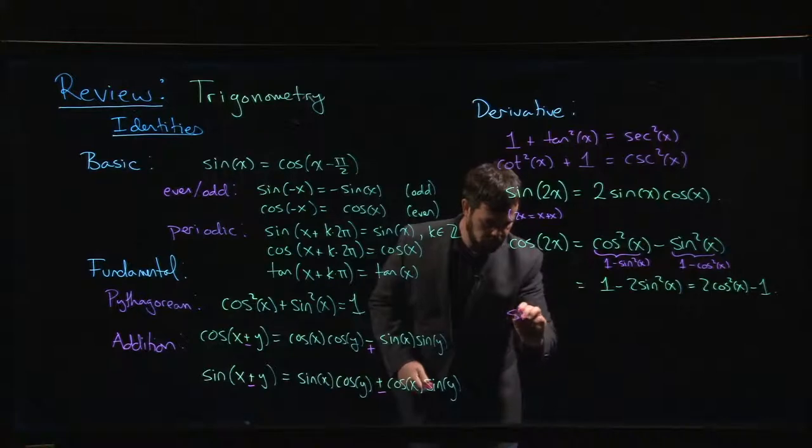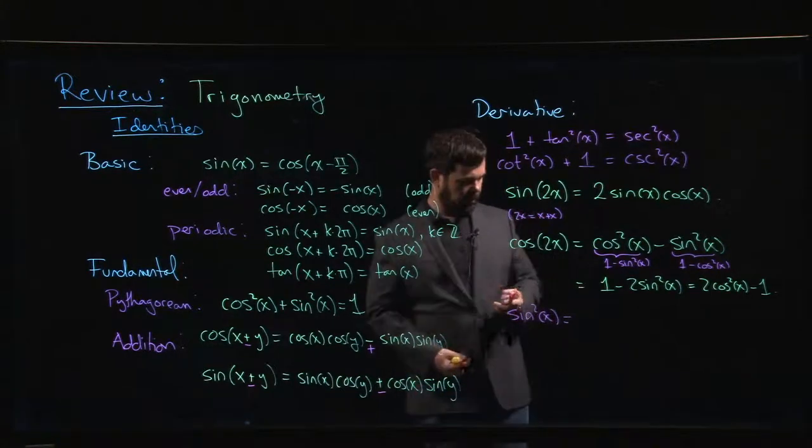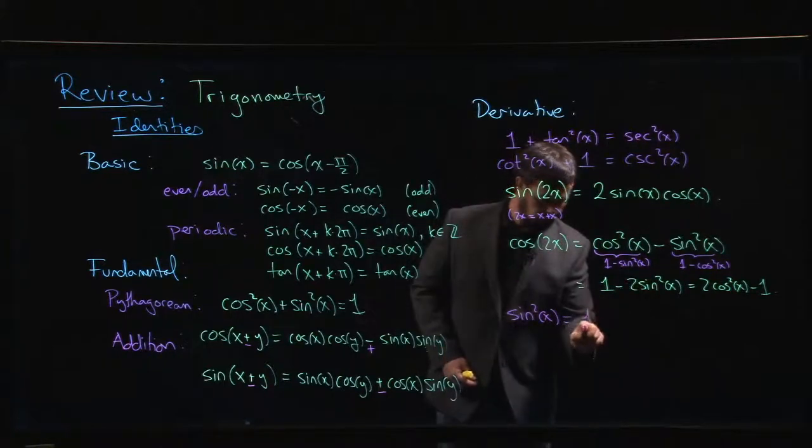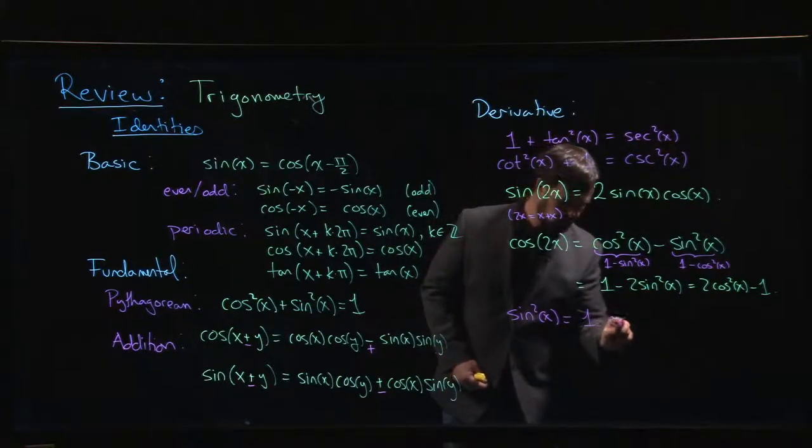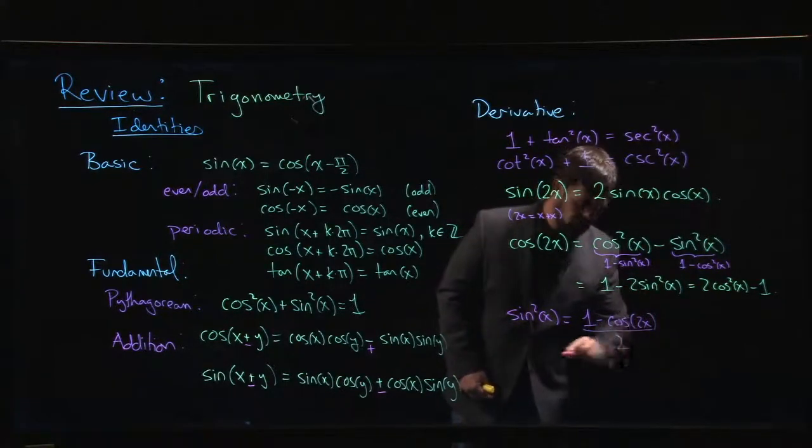you get that sine squared x is going to be, so I'm going to move the sine squared to that side, move the cos to that side, 1 minus cos 2x, so I've got to divide by that, 2.